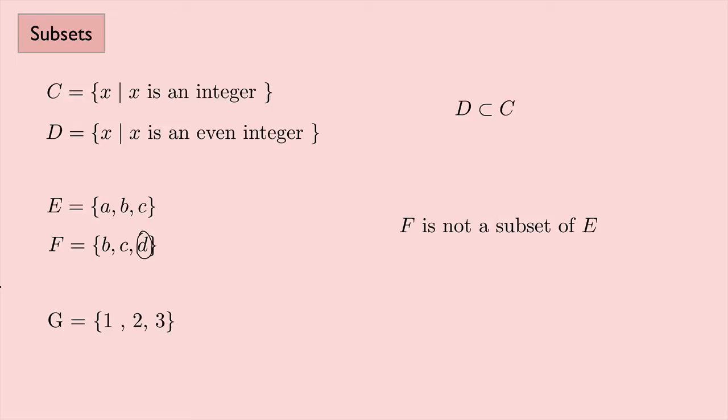How about if I have the set G, which is the elements 1, 2, and 3, and then I have the set H, which is also the elements 1, 2, and 3?